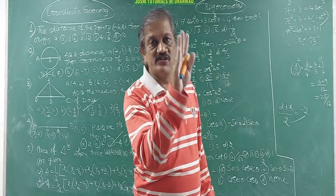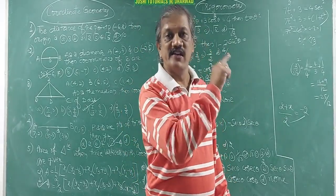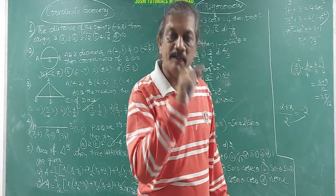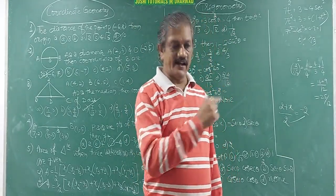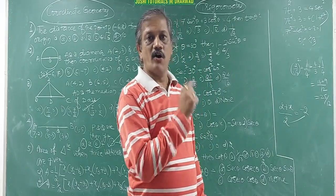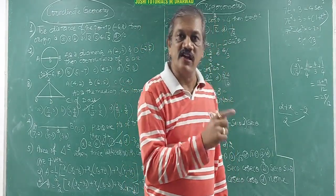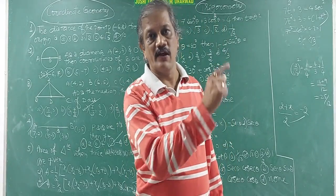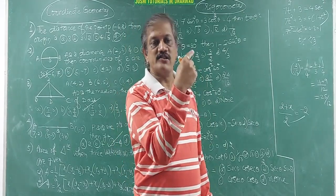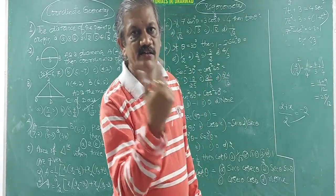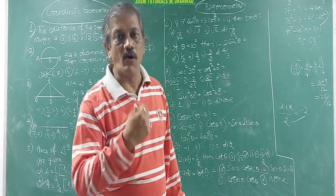Sin 0° = 0, sin 30° = 1/2, sin 45° = 1/√2, sin 60° = √3/2, sin 90° = 1. Cos 0° = 1, cos 30° = √3/2, cos 45° = 1/√2, cos 60° = 1/2, cos 90° = 0. Similarly memorize tan, cosec, sec, and cot values — you know the tricks to remember them.